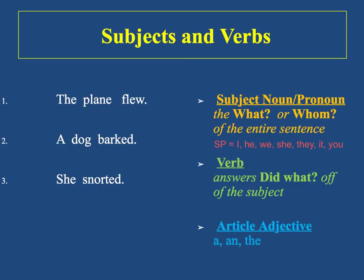To find the subject, ask who or what. So in this case, what flew? The answer is plane, so plane is your subject. And since plane is a noun, we'll call it the subject noun and label it S-N. To find the verb, we ask did what? So the plane did what? The answer is flew, so flew becomes our verb, and we will label it V for verb.